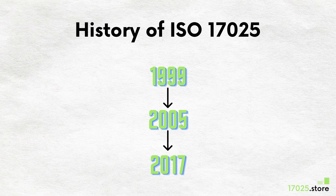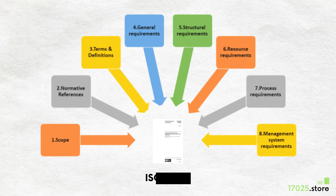The latest and current valid version is 2017, which has modified the structure to include: scope, normative references, terms and definitions, general requirements, structural requirements, resource requirements, process requirements, and management system requirements.